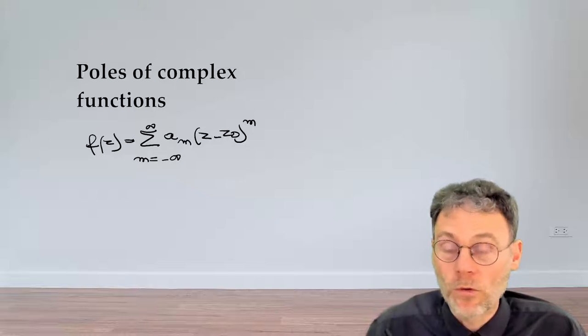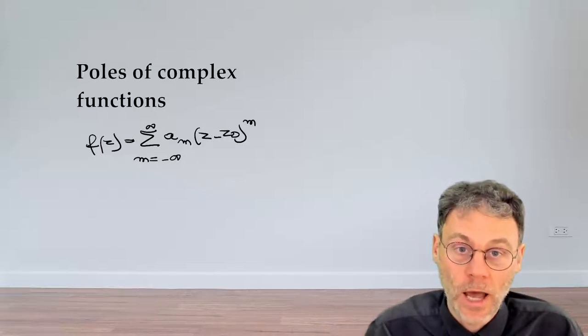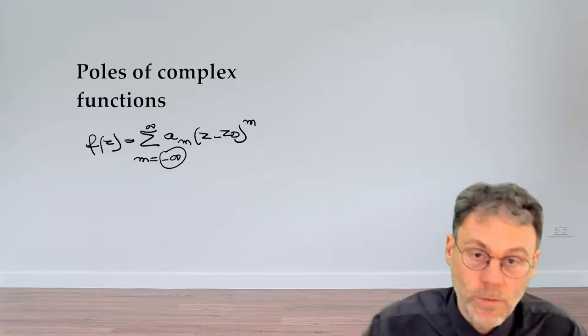And then to figure out whether we have a pole and what type of pole that we have, we should look at the lower bounds of this summation here.